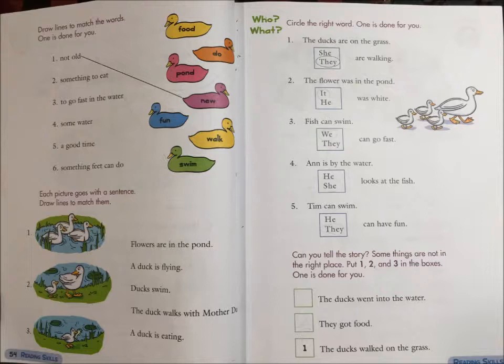5. Tim can swim. He or they can have fun. Can you tell the story? Some things are not in the right place. Put 1, 2, and 3 in the boxes.